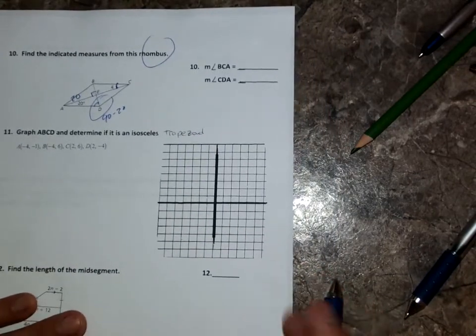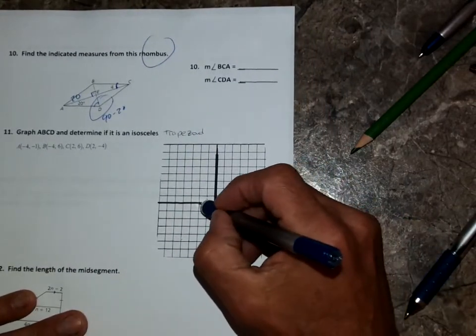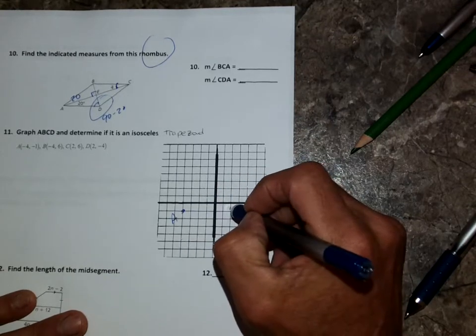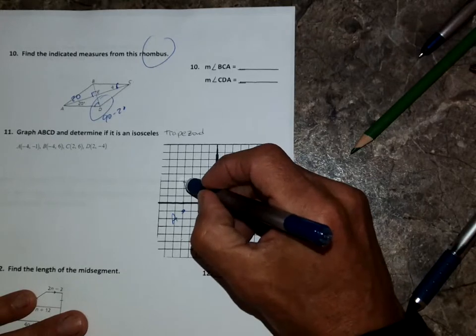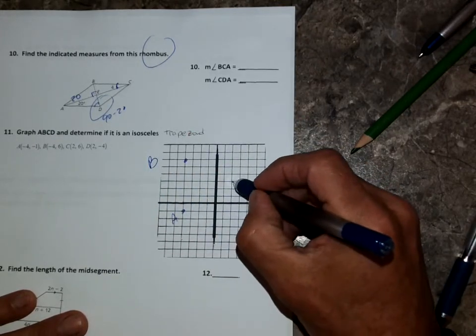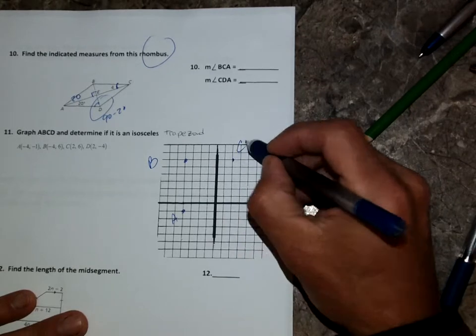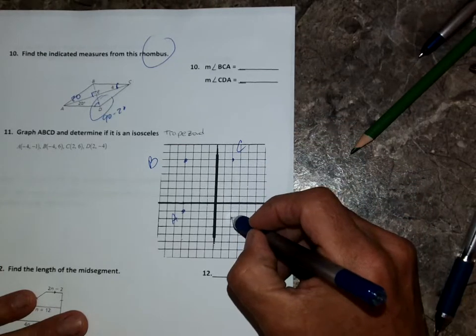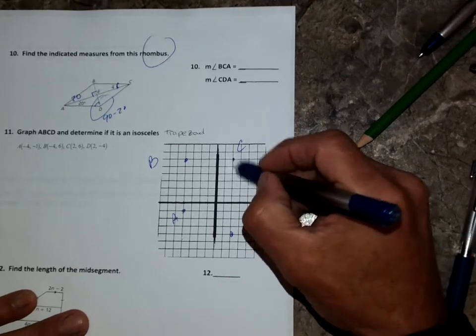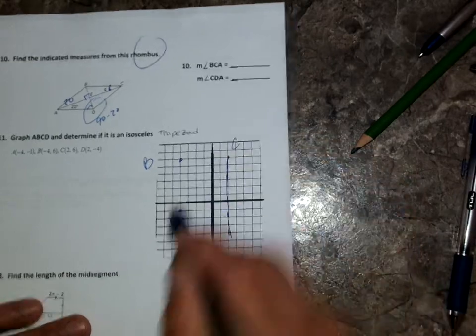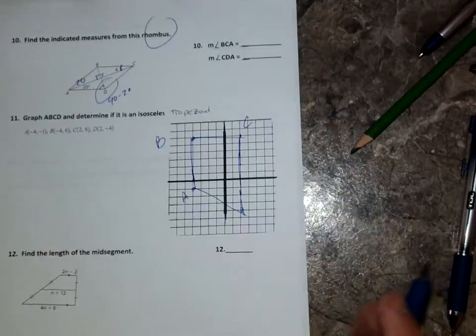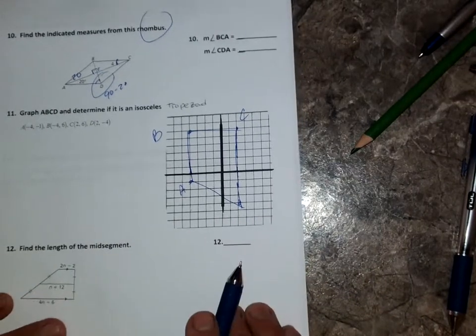Graph it if it's an isosceles trap. So you got negative 4 negative 1. There's A. Negative 4, 6. There's B. 2, 6. There's C and 2 and negative 1. Looks like a trapezoid, but I don't think it's isosceles. So I'm going to say no. Sure looks like we've got parallel sides, but I don't think it's a trapezoid. Or an isosceles trapezoid. I don't think so at all.